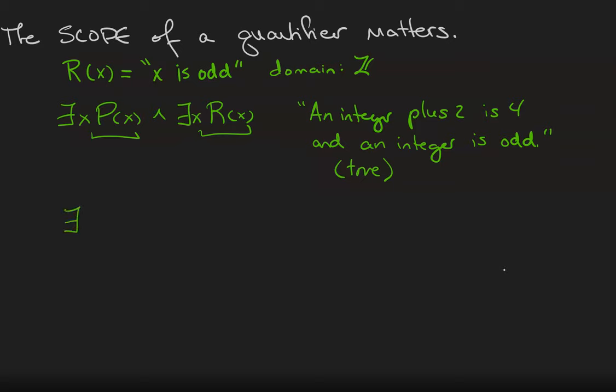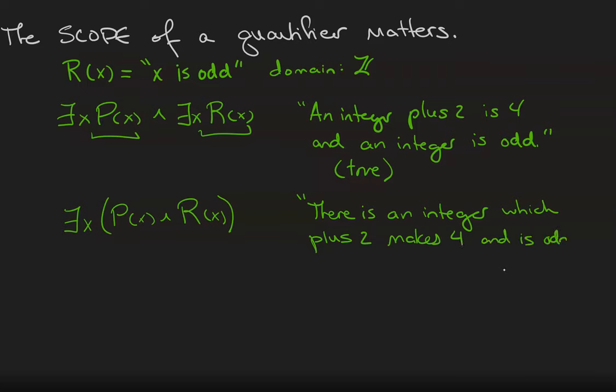Now if I use a single quantifier and I wrap the statement P(x) and R(x) in parentheses, I get the statement that there is an integer which plus 2 makes 4 and is odd. And you'll find that statement to be false because the only integer plus 2 that makes 4 is 2 and 2 is not an odd integer.